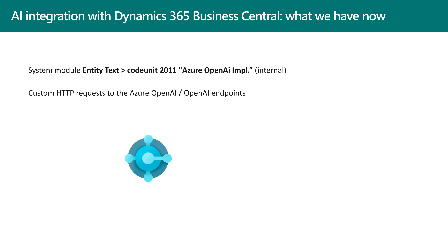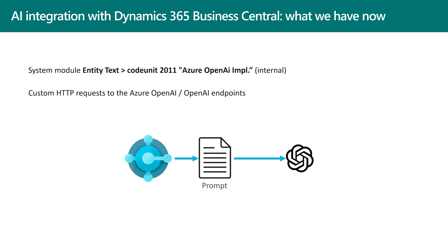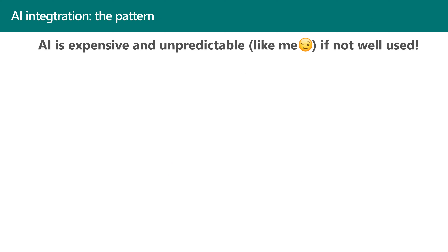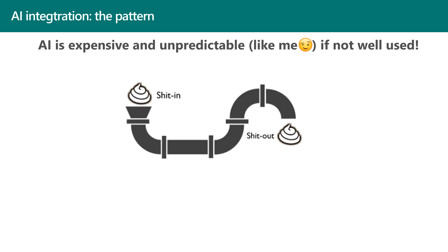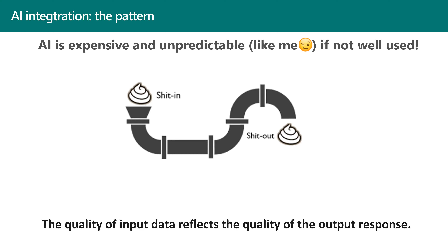What does this code unit simply permit you to do? It's quite simple. It permits you to create a prompt — a query for the OpenAI engine — and then send requests to the OpenAI engine and retrieve responses. When you use integrations with Azure OpenAI, remember that AI is often unpredictable and can be expensive. AI respects this pattern: if you give garbage in, it gives garbage out. The quality of the input data reflects the quality of the output response, so you need to provide good data and good prompts to get a great response.